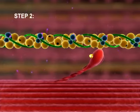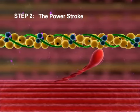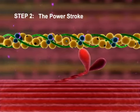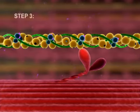Step 2: The Power Stroke. ADP is released and the activated myosin head pivots, sliding the thin myofilament toward the center of the sarcomere.